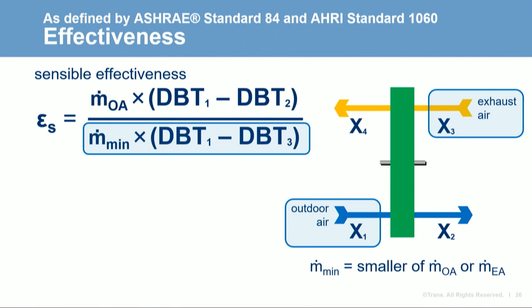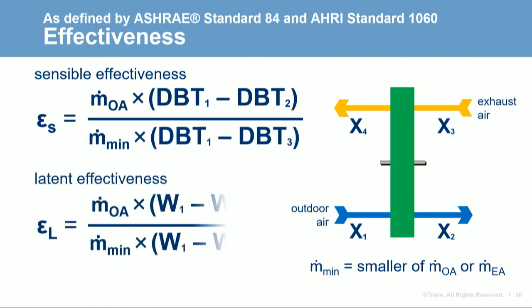Note that if the outdoor and exhaust flow rates are not equal, the maximum energy transfer is limited by the smaller of the two flow rates. The equation for calculating latent effectiveness is similar but uses humidity ratios in place of dry bulb temperatures. There's a third equation for total effectiveness that combines both sensible and latent transfer.